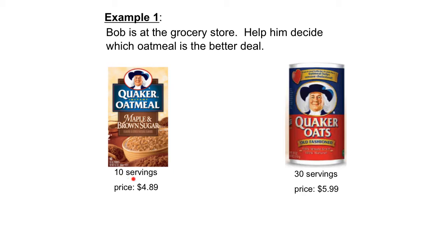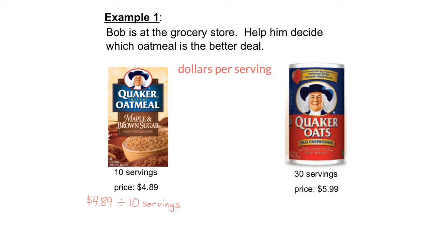Since we're dealing with the number of servings, we'll make our unit price in dollars per serving and calculate it for each option. The word 'per' means divide, so we take the dollars divided by the number of servings. For the first option — $4.89 for 10 servings — that's $4.89 divided by 10, which works out to $0.489 per serving. Because we're just finding a unit price to compare, we don't need to round to the nearest cent.